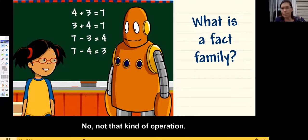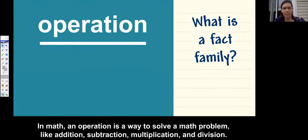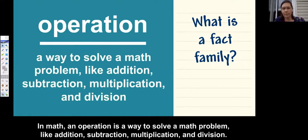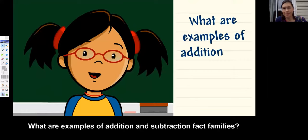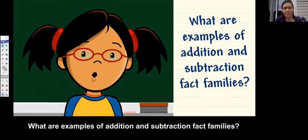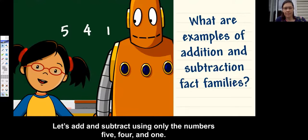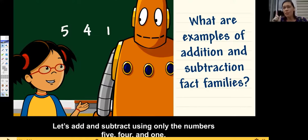Not that kind of operation. In math, an operation is a way to solve a math problem — like addition, subtraction, multiplication, and division. What are examples of addition and subtraction fact families? Let's add and subtract using only the numbers five, four, and one — these are the numbers we used when I showed you how to do it earlier. So you'll see you already know some things they're telling you.